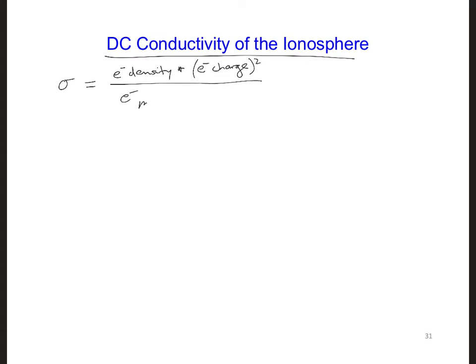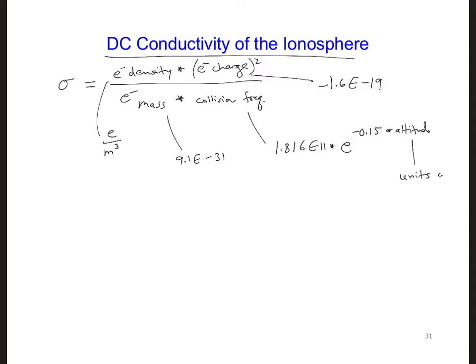All over the electron mass times the collision frequency of the electrons. In this equation, the electron density here is in units of electrons per meter cubed. The electron charge and mass is given by, let's see, the charge is minus 1.6 e to the minus 19, and the mass is 9.1 e to the minus 31. The collision frequency describes how often electrons collide or bump into other atoms in the ionosphere. This value changes with altitude as 1.816 e to the 11 times e to the minus 0.15 times the altitude.